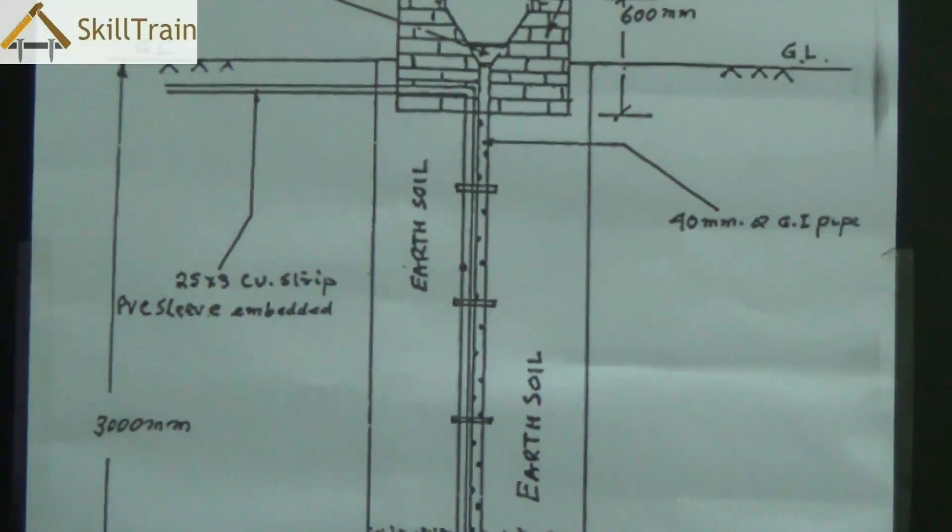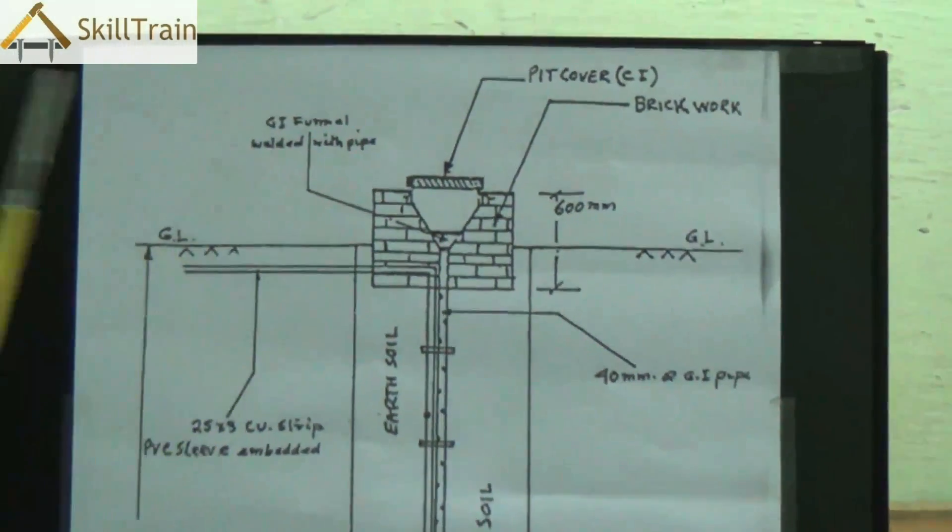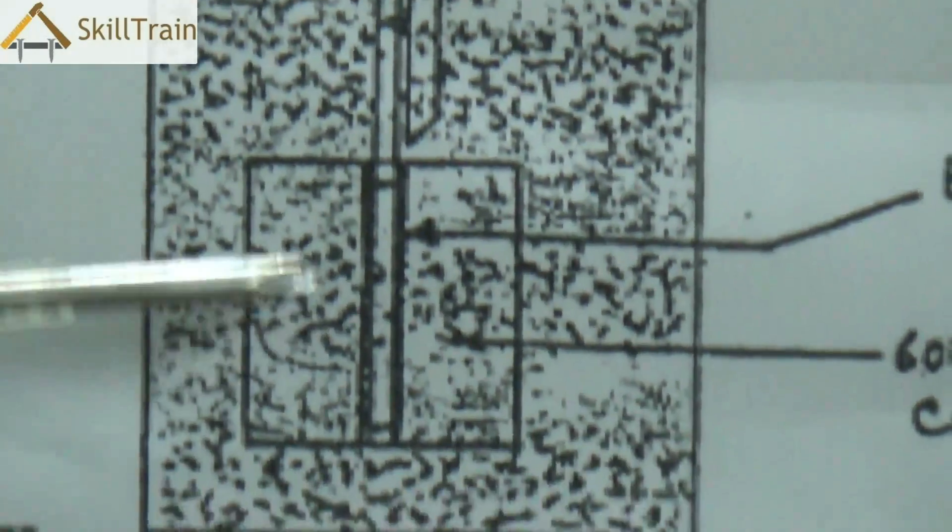We also keep a small pipe. Let's say about 40 millimeters pipe to ensure and a funnel is welded onto the top. This funnel and the pipe is primarily used to pour in water whenever it is required.